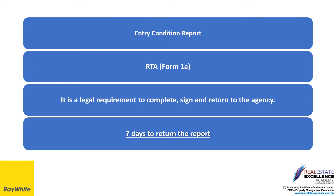The Form 1A is the Entry Condition Report. It is a legal requirement for you to complete, sign, and return the Form 1A to our agency within seven days of taking possession. You are given a copy completed and signed by our agency on or before the day you take possession — usually the day you collect the keys. During your legal time period to complete and return the Form 1A, if you have any questions or concerns, please contact our property manager and then return the report within the seven days set out in the legislation.